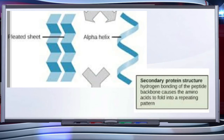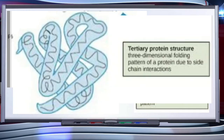A protein thread does not exist throughout as an extended rigid rod. The thread is folded in the form of a helix, similar to a revolving staircase. Only some portions of the protein thread are arranged in the form of a helix — in proteins, only right-handed helices are observed. The hydrogen bonding of the peptide backbone causes the amino acids to fold into repeating patterns, forming what is called the secondary structure.